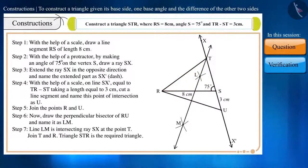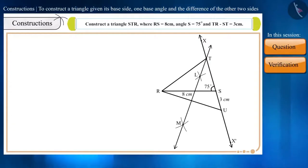So friends, in this way we solved this question, that is, we constructed the triangle. Can you verify this construction? We will give you a hint. You can verify this construction by showing TR minus ST is equal to SU.